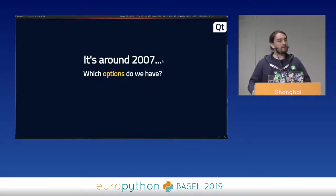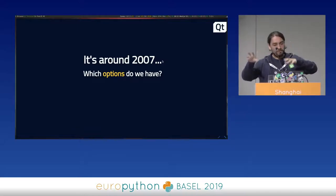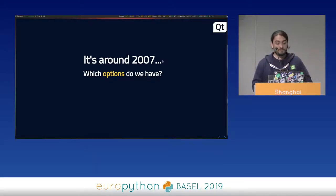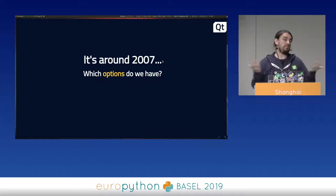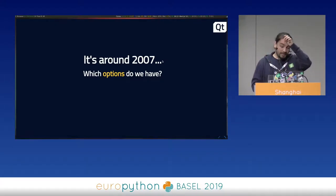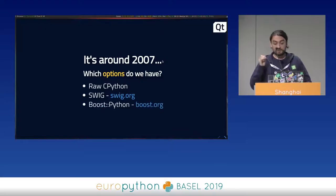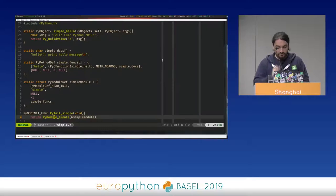You may be aware there is already a set of bindings called PyQt, developed by a different company, which is really old and does a lot of great work. The Qt project wanted an official adoption of these things, so they decided to create a new set of bindings. At the time, the developers had a couple of options: raw CPython, SWIG, or Boost.Python.